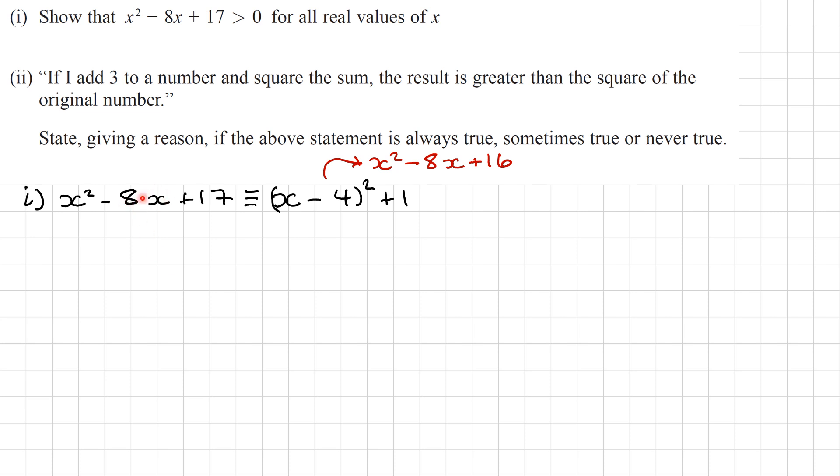I've just written this in a different way. We want to show then that this is greater than 0. Now let's have a look at this first part here. Now whenever you square any type of number, it's going to become positive. The smallest it can be is 0. So this part here is always going to be greater than or equal to 0, never negative.